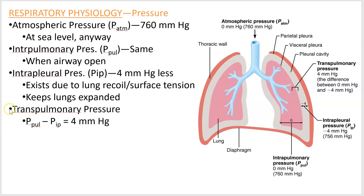There is a measure called transpulmonary pressure, which is the difference between the intrapulmonary pressure inside the lungs and the intrapleural pressure outside the lungs. You always want it to be greater inside the lungs than in the intrapleural space, or else you get a collapsed lung. That's what happens when you suffer an injury to your ribcage — the intrapleural pressure becomes greater and the lung collapses on itself.